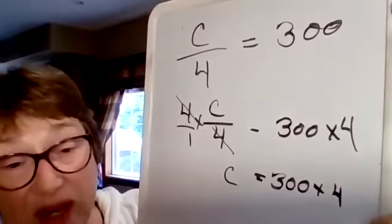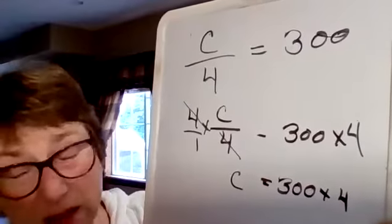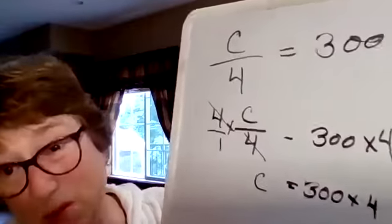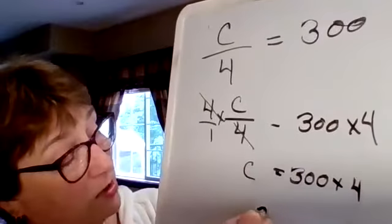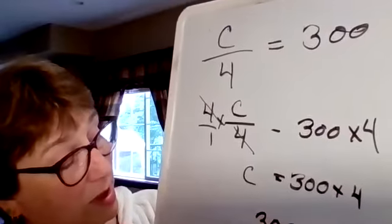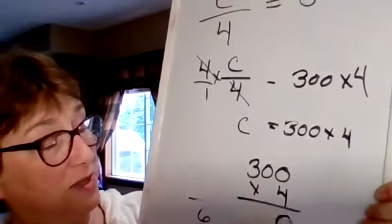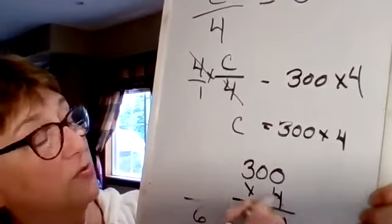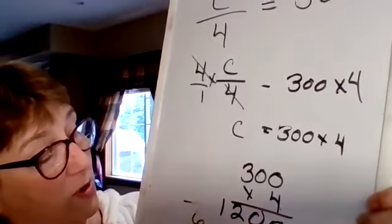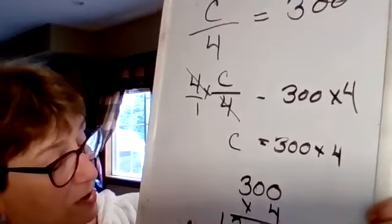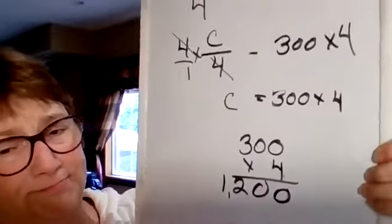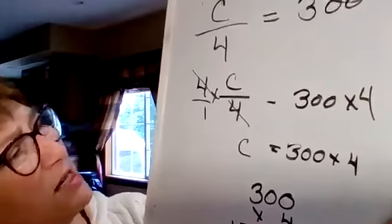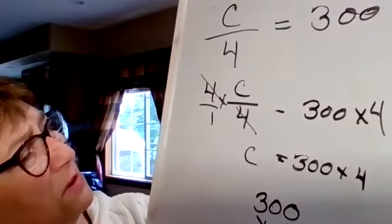I don't know what that is off the top of my head. If you have a calculator, punch it in. Otherwise, you have to work it out like I do. So 300 times 4. 4 times 0 is 0. 4 times 0 is 0. 3 times 4 is 12, 1200. Does that seem right?